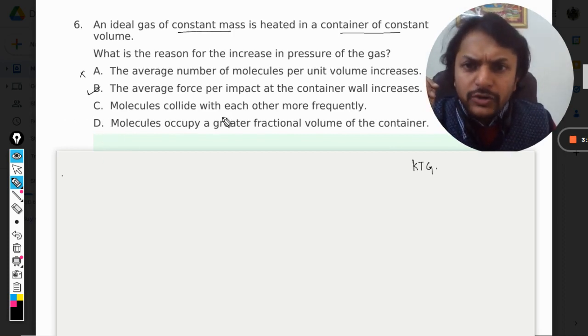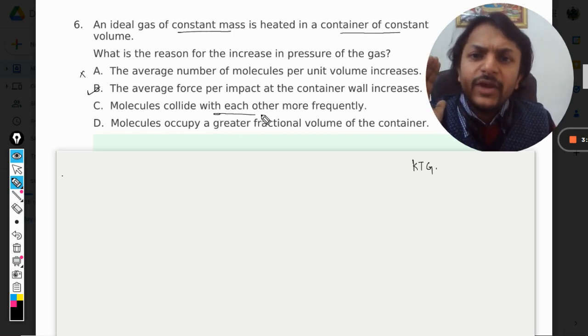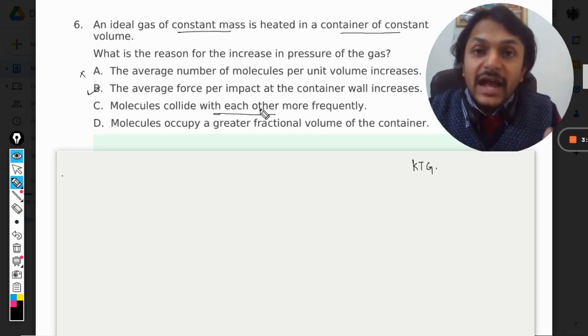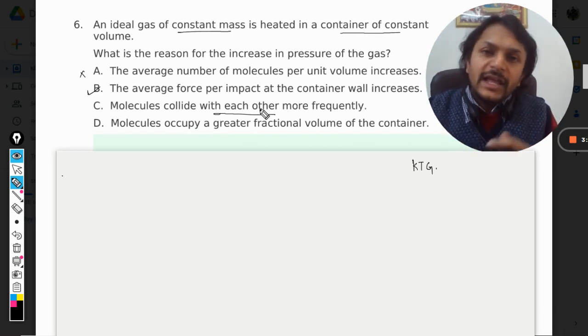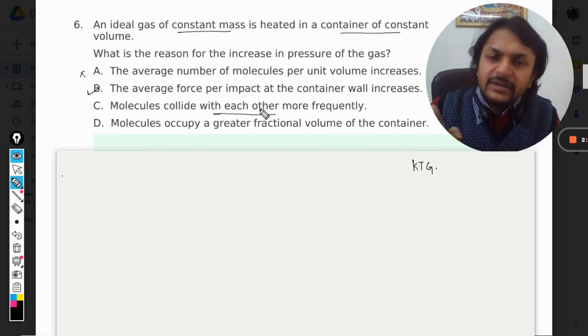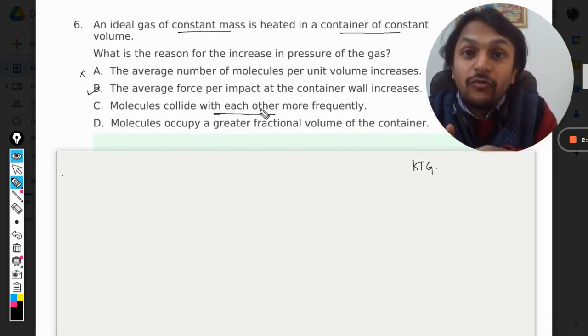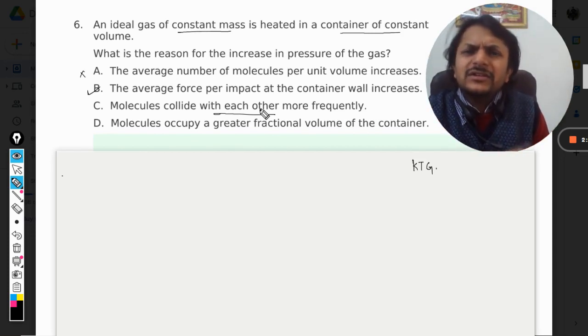Let us go for C and D also. Molecules collide with each other more frequently - yes, this is true, but if they're colliding with each other, that does not mean they are creating pressure on the wall. Pressure on the wall will be created by the collision of molecules with the wall.